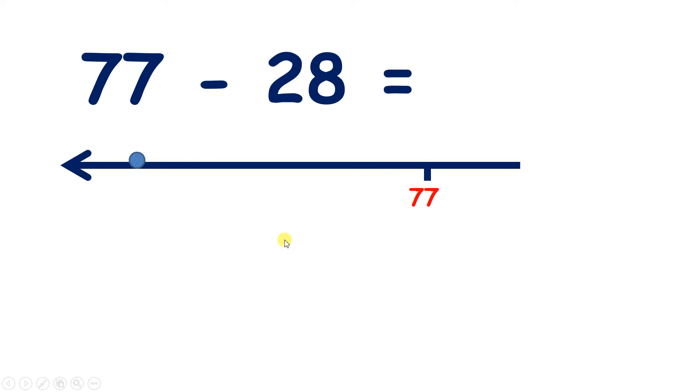So 77 minus 30 is 47. And 47 add 2, gives us our answer, 49.